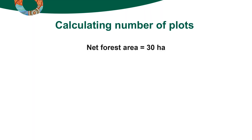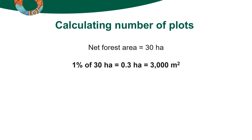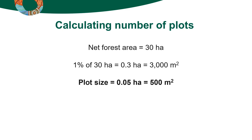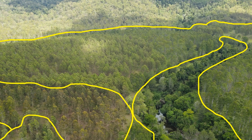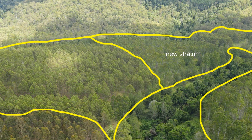To properly work out the number of plots to be sampled requires statistical calculations. However, as a general guide, around 0.5 to 2% of the net forest area should be sampled. If the forest is large or fairly uniform, sample about 0.5%; if it is small or relatively diverse, sample up to 2%. For example, if your net forest area is 30 hectares with not too much variation, you might sample 1% of the area — 0.3 of a hectare or 3,000 square metres. If your plot size is 0.05 hectares or 500 square metres, you would need 6 plots. For each stratum, ensure that you have at least two plots and that the forest has been correctly stratified.